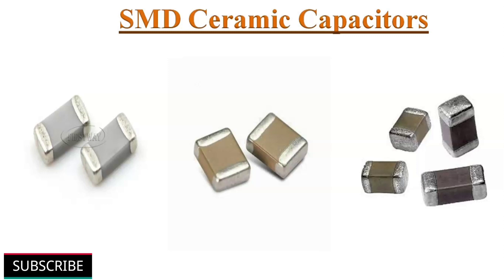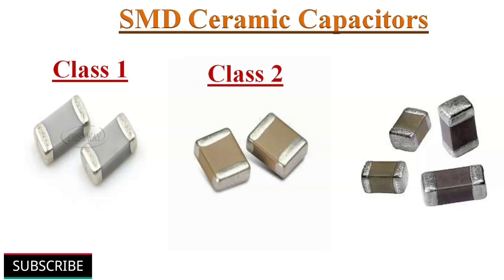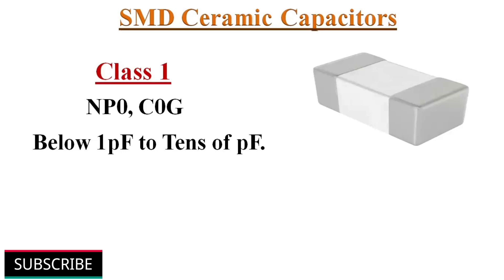The color of the ceramic body material can sometimes help identify its value. White colored ceramic capacitors are usually class 1 capacitors, light brown ones are generally class 2, and black or dark brown ones are usually class 3. Class 1 ceramic capacitors are COG and P0 multilayer ceramic capacitors, usually white, with very low capacitance values from below 1pF to some tens of pF.